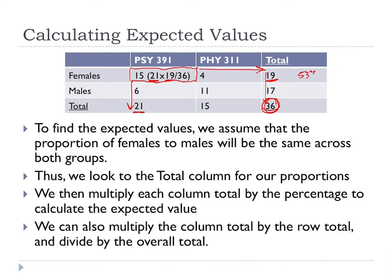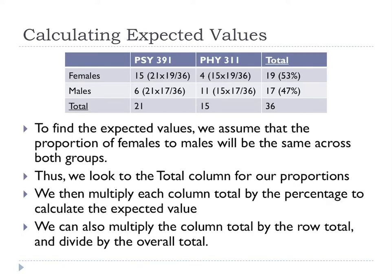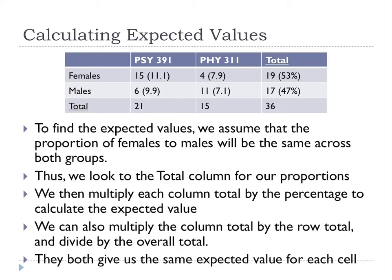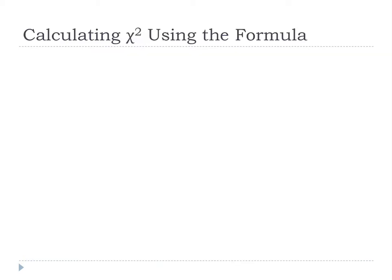Whichever way you want to remember it is fine. We find expected values for each one of these cells. Now we have our observations and our expectations for each single cell — that's all we need to solve for chi-square is O and E. The rest of it is just math. So let's calculate chi-square using this formula: O minus E, squared, divided by E.